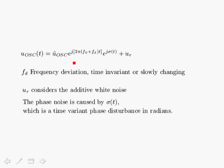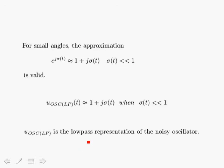If we substitute this approximation back into the expression, and since we're dealing with a direct conversion receiver, we can use the low-pass representation shown here, where we've modulated it down to baseband. We have a basic constant term one plus j-sigma-sub-T. This is the low-pass representation of a noisy oscillator, and what's very important is that the exponential now became a multiplicative factor.